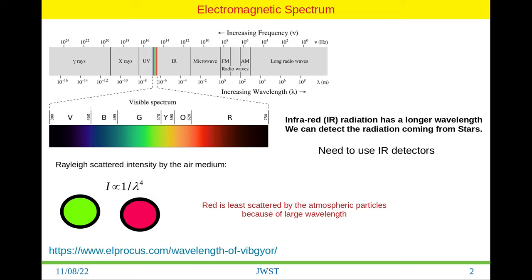To understand the more details, first you have to understand the electromagnetic spectrum. The electromagnetic spectrum consists of the visible region. The visible region is basically made of violet at the lower wavelength and red at the higher wavelength region. If you go to the further larger wavelength, this is called the infrared region. Then if you increase the wavelength further, it becomes microwave, and then radio waves, and then long radio waves.